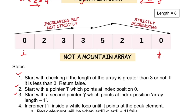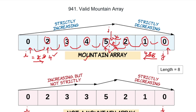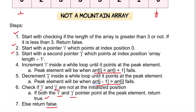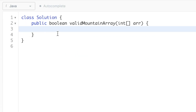Before checking if i equals j, we must verify that i and j are not in their initialized positions. For a sorted array, i would reach the last element and j would remain at length minus one, making i equal to j — but a sorted array is not a valid mountain array. So we must check that i is not at zero and j is not at length minus one, ensuring both pointers have actually moved.